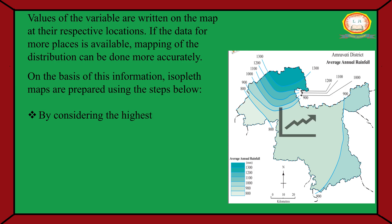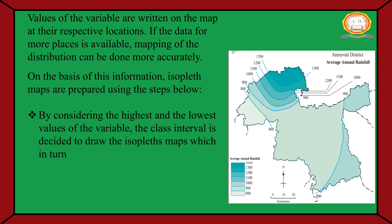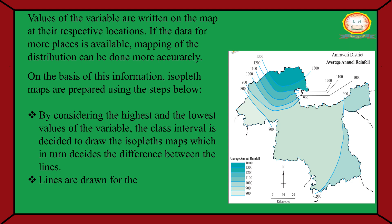By considering the highest and the lowest value of the variable, the class interval is decided to draw the isoplat maps, which in turn decides the difference between the lines. Lines are drawn for the decided intervals. Locations with the same values are joined by a line.